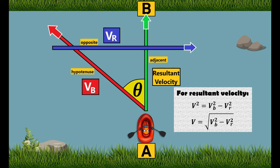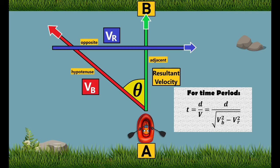Now if the question asks for the time taken to reach from point A to point B, we can write: time = displacement / resultant velocity v. Since we are traveling through the shortest path, the width of the river is the displacement, denoted as d. For resultant velocity v, we substitute the value found earlier: √(vb² − vr²).